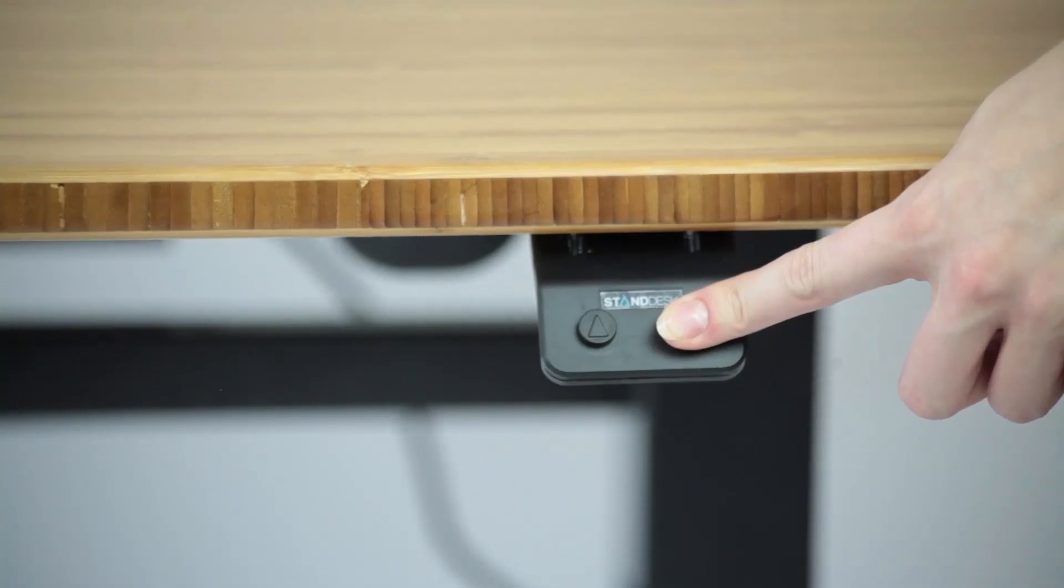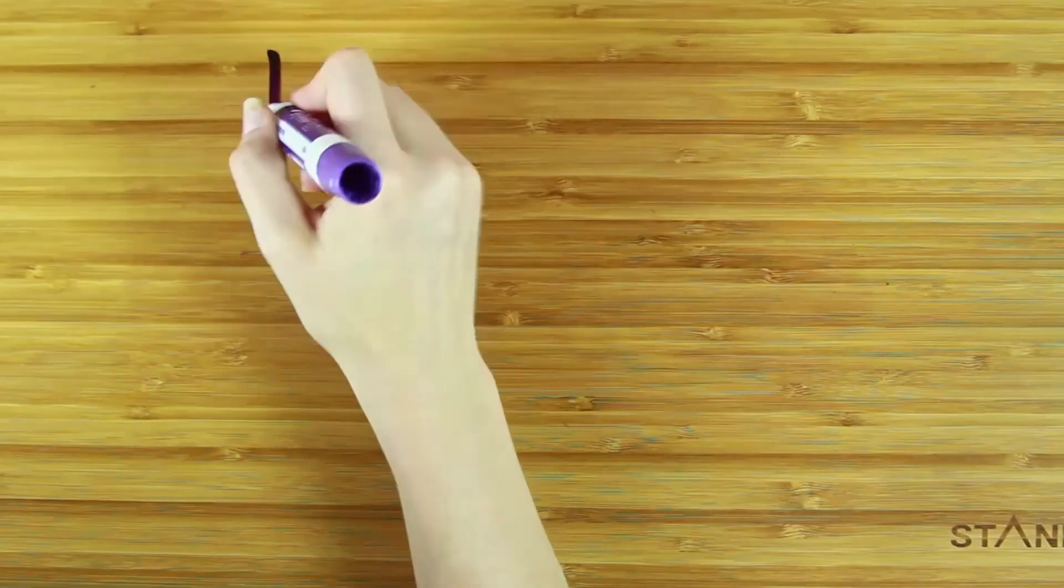To initialize your desk simply press the down arrow for 15 to 30 seconds. This will make your desk go to its lowest position. Once the desk stops you're ready to get standing.